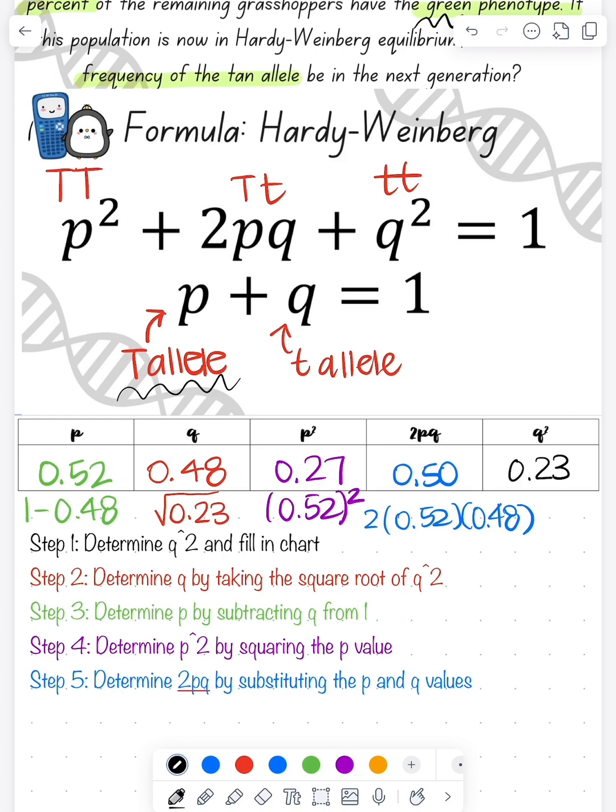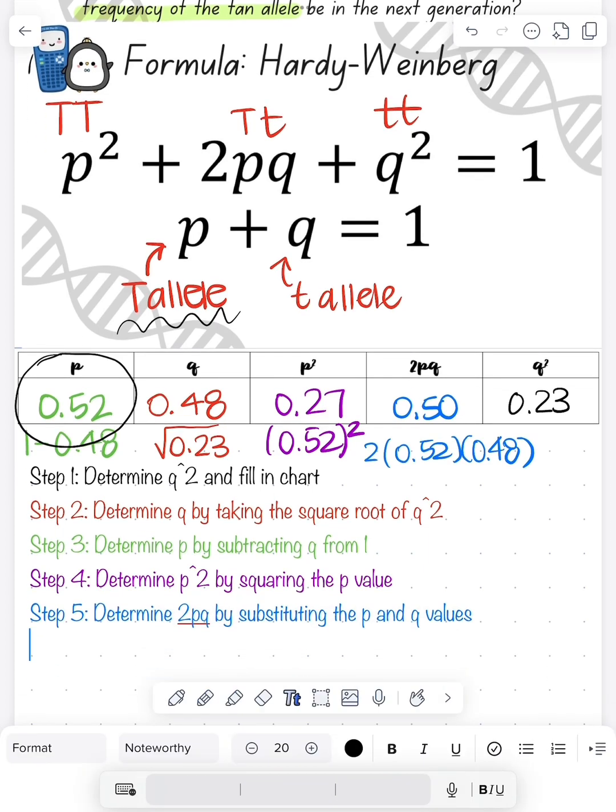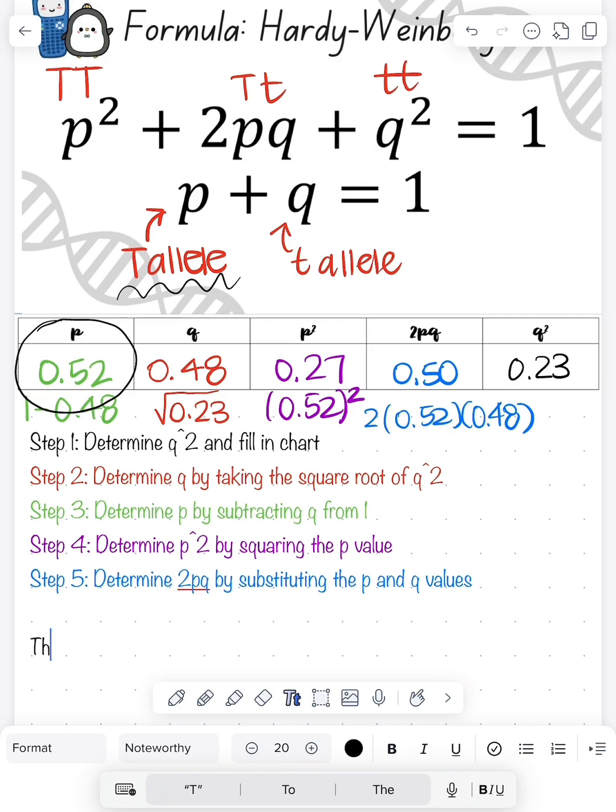If I look at my chart, I see the p value is 0.52. So the final answer for the question is that the frequency of the tan allele is 0.52 or 52%.